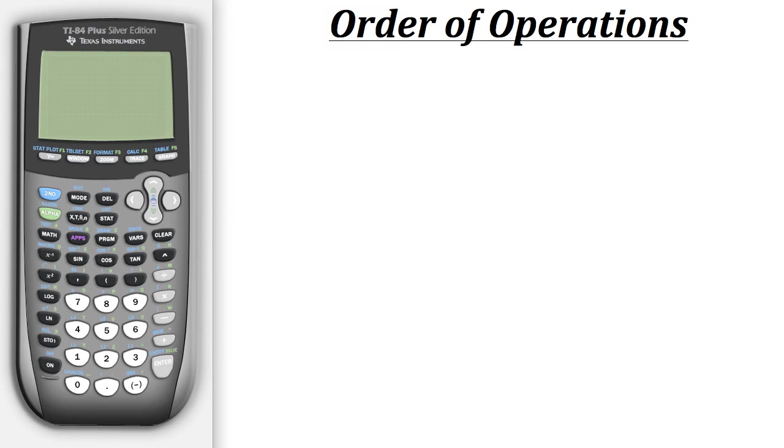Now let's take a look at another example. So here we have 3 minus 2 times the quantity 7 plus 4. Now when evaluating this on a calculator, there are a couple very common mistakes that occur. The first one is this.